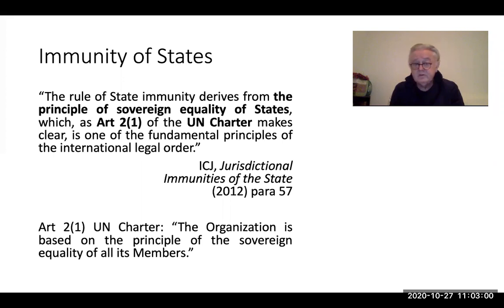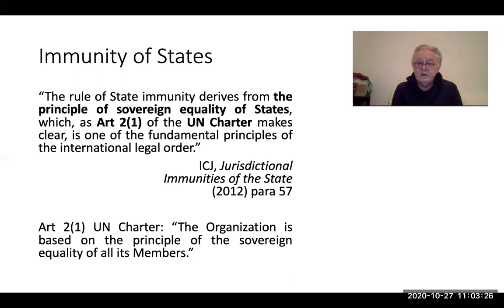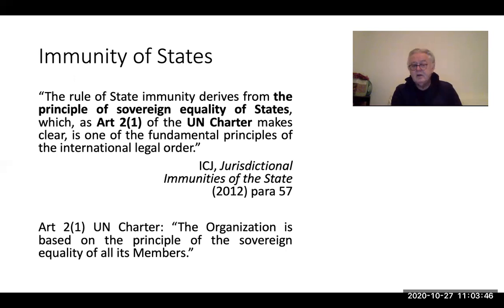The immunity of states means that the state itself as an entity cannot be judged by the courts of another country. We have a decision from the International Court of Justice — not quite ten years old — in the case of the Jurisdictional Immunities of the State, involving Italy, Greece and Germany, concerning claims related to the Second World War. The principle behind it is found in the UN Charter: the sovereign equality of states means one state cannot judge another.